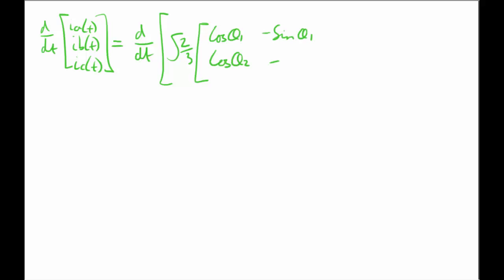So what do we have to do? We already have a transformation matrix that transforms the I abc to I dq. But we have to find the derivative of I abc. So we have to find the derivative of the values on the right side.